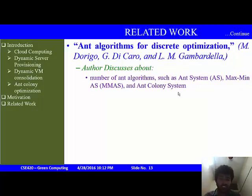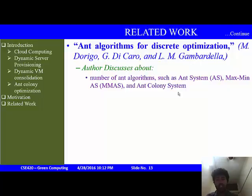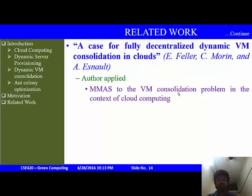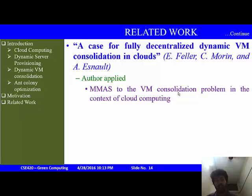'Ant Algorithms for Discrete Optimization' by M. Dorigo, G. Di Caro, and L. M. Gambardella discusses different ant algorithms such as AS, Max-Min AS, and Ant Colony System. 'A Case for Fully Decentralized Dynamic VM Consolidation in Cloud' by E. Feller, C. Morin, and A. Esnault applies the Min-Max Ant System to the VM consolidation problem in the context of cloud computing.